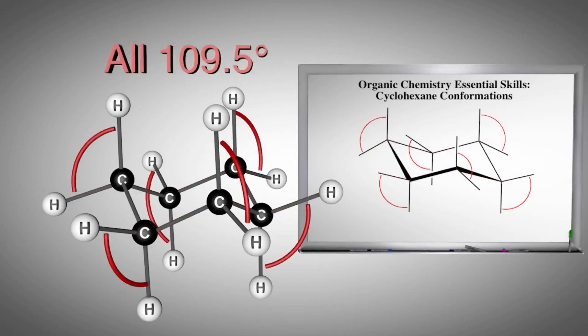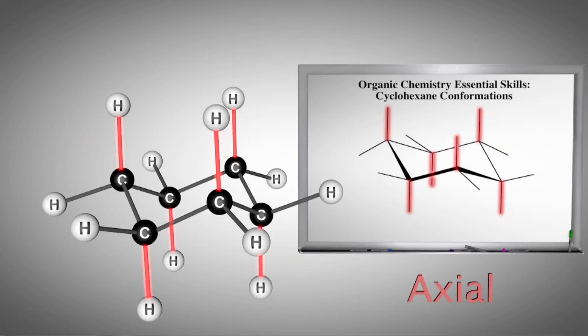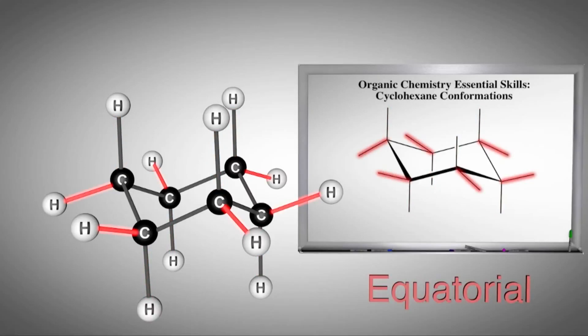Notice that the equatorial bonds all form 109.5-degree angles with the axial bond on the same carbon. In addition, there are six parallel axial positions on each carbon of the ring, alternating up and down. And there are six equatorial positions around the ring, which adopt their names due to similar terms found on a globe.